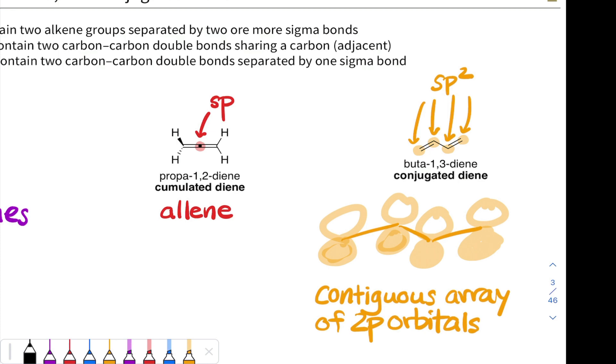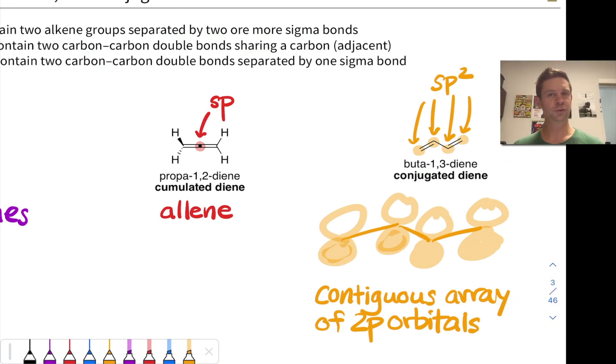Because of that hybridization, there are unhybridized p orbitals on each of the carbons. Those p orbitals are lined up in such a way that they can overlap in a side-by-side fashion. So the electrons in these two double bonds are really delocalized over all four atoms. This is the hallmark of a conjugated system.